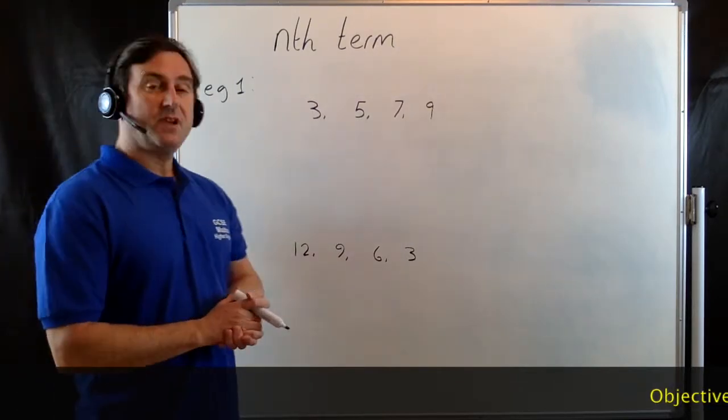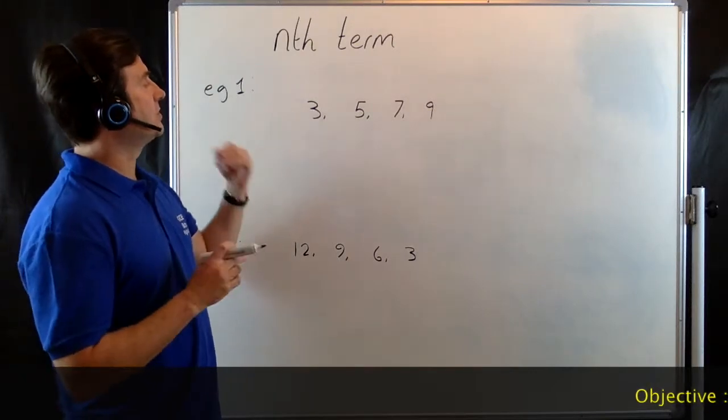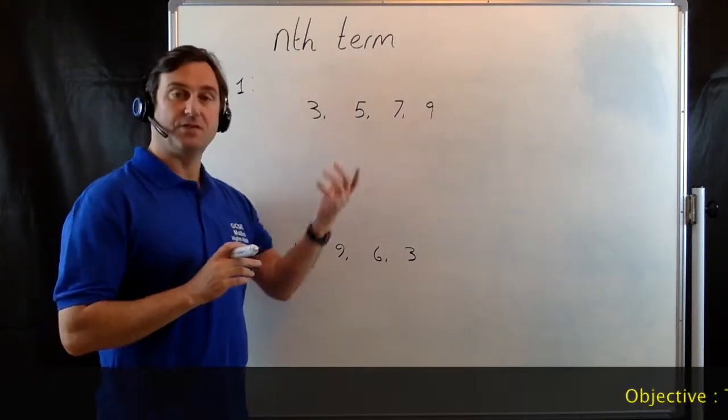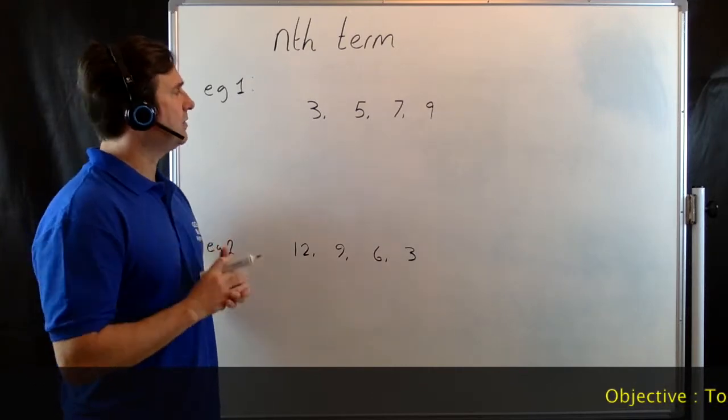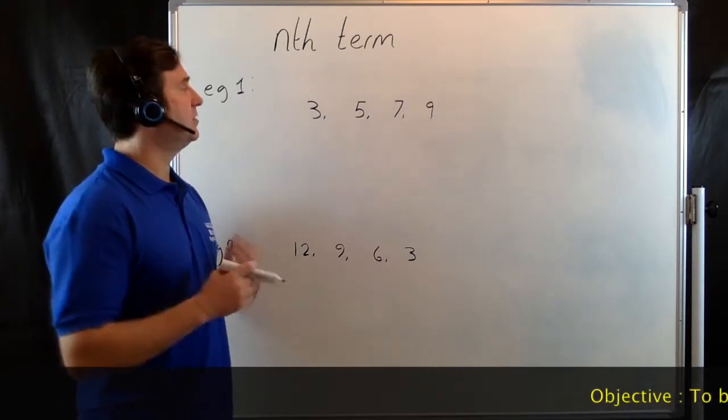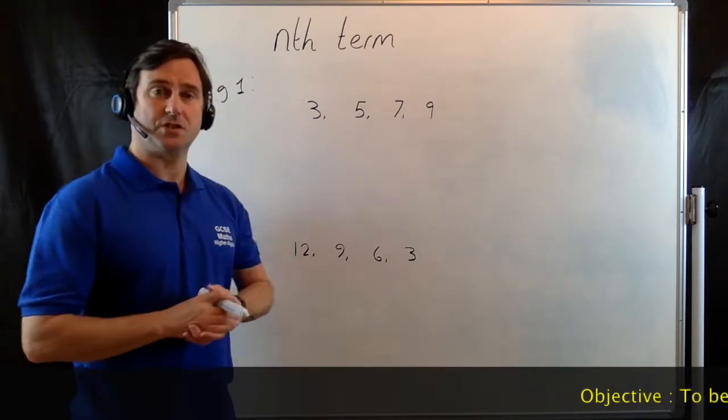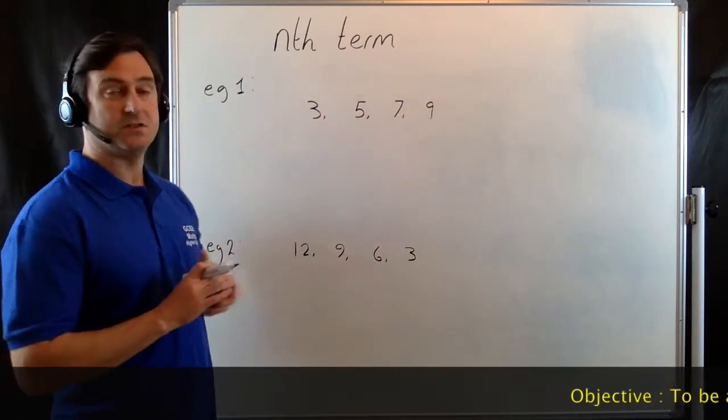Example one. We've got to find the nth term for this sequence of numbers. Now, what we've got to understand here is the nth term is looking at what's known as a position-to-term rule, rather than a term-to-term rule.